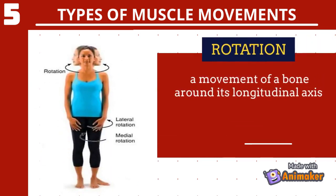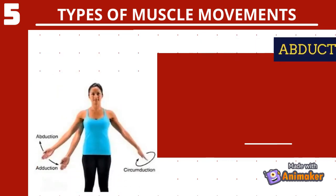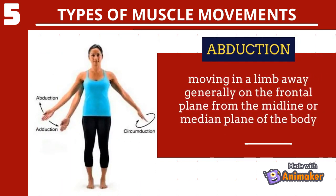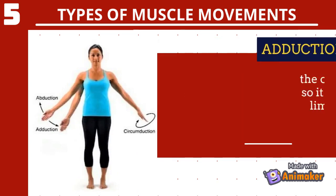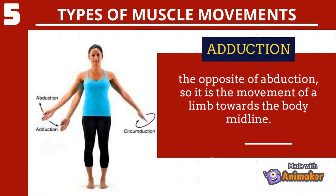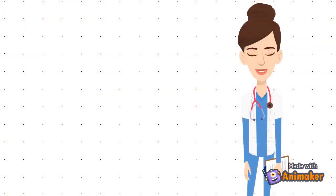The third type of muscle movement is rotation — a movement of a bone around its longitudinal axis. The fourth type is abduction, moving a limb away, generally on the frontal plane, from the midline of the body. The fifth and last type is adduction, the opposition of abduction, which is the movement of a limb towards the body.